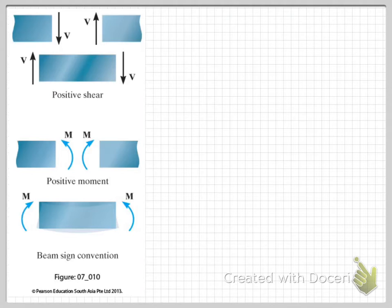So our diagram here from Hibbeler shows that when we're looking at the right-hand side here, our positive shear force is acting vertically upwards, and our positive moment is clockwise. So let's go and put those on our free-body diagram.